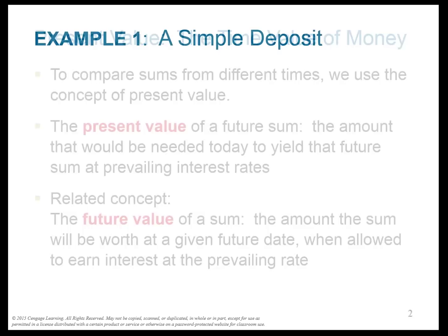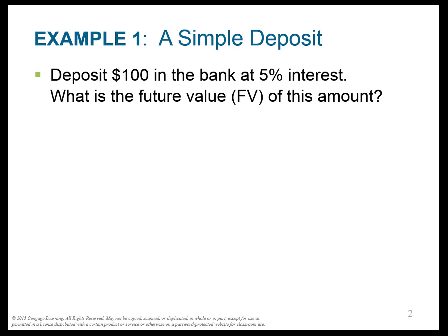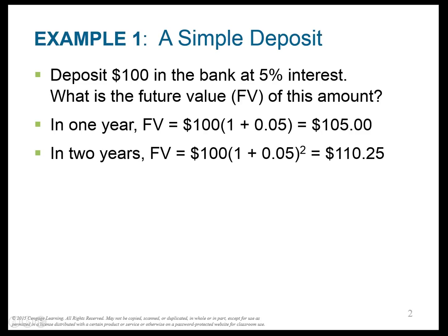Let's do a simple deposit. Imagine we are the savers and we deposit $100 in the bank at 5% interest. In one year, the future value is 1.05 times $100, which equals $105. In two years it's worth even more — it goes up $5.25 rather than $5, because in the second year you earn interest not only on the original $100 principal but also on the extra $5. That's interest on your interest, which is called compounding.